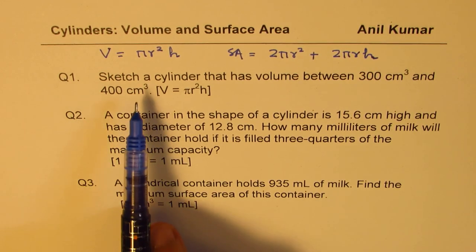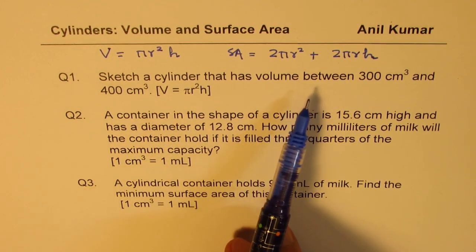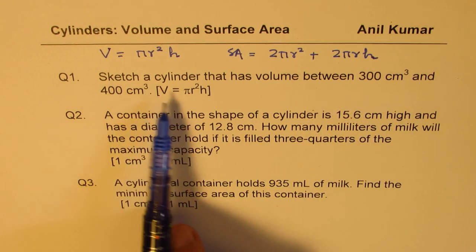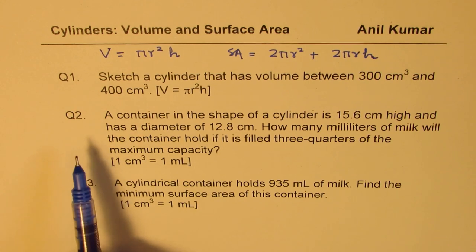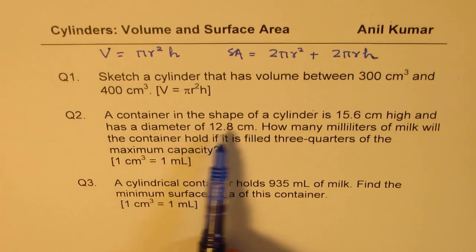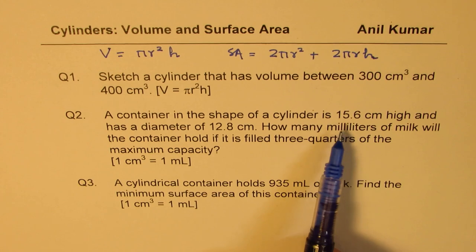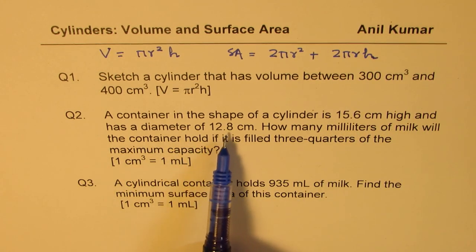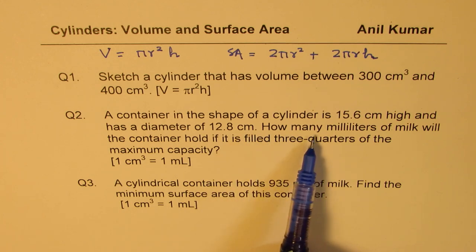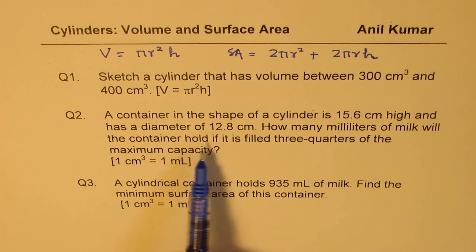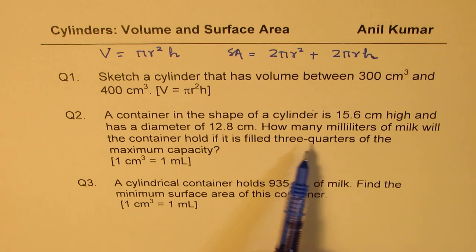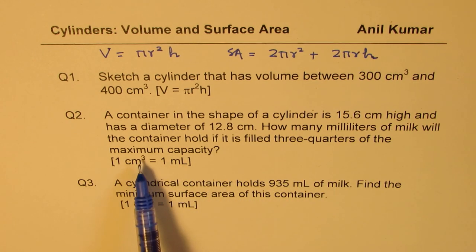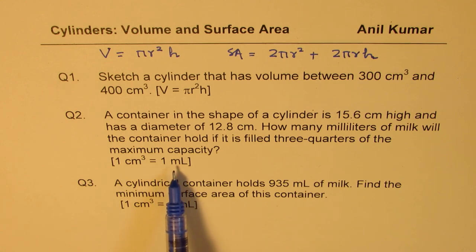Question number one: sketch a cylinder that has volume between 300 centimeter cube and 400 centimeter cube. You're given the formula right there. Question two: a container in the shape of a cylinder is 15.6 centimeters high and has a diameter of 12.8 centimeters. How many milliliters of milk will the container hold if it is filled three quarters of the maximum capacity? One centimeter cube is the same as one milliliter.